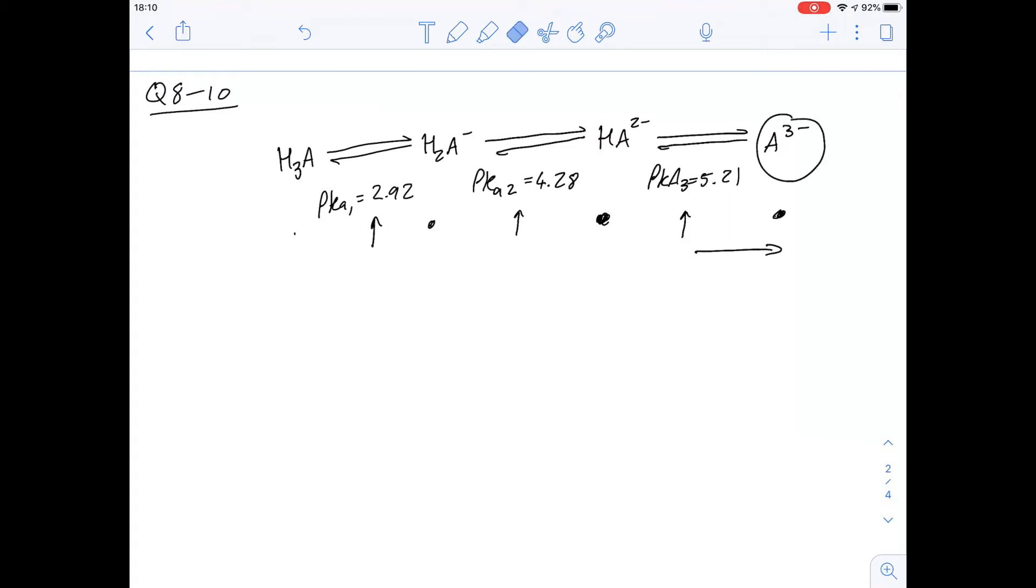Until 4.28 where they'll be at equilibrium. If you keep decreasing the pH, this will become the dominant species until it gets below 2.92 where this will become the dominant species.